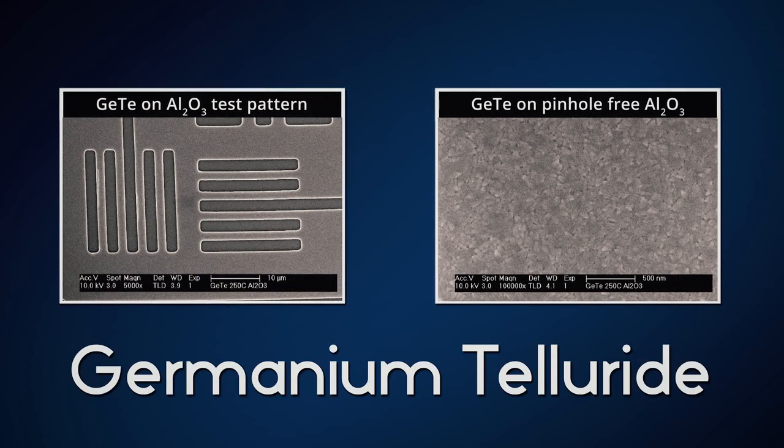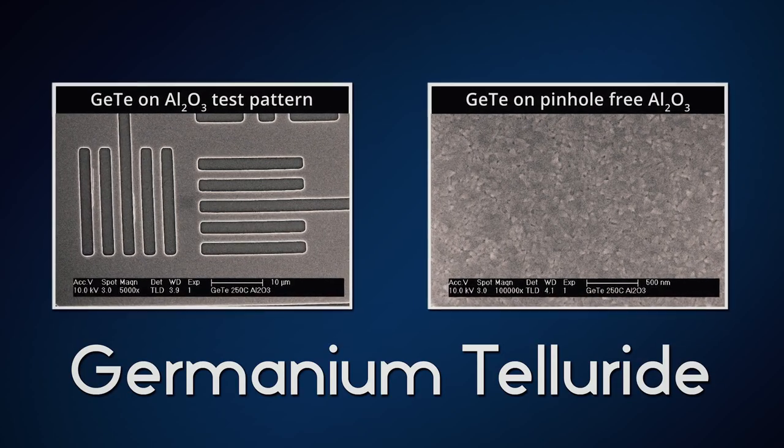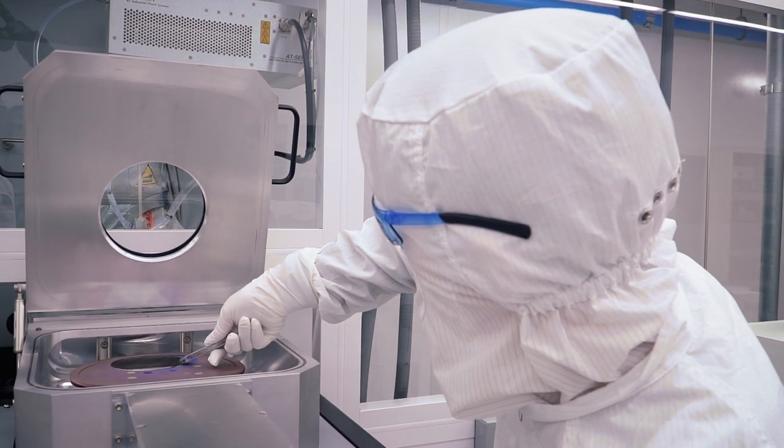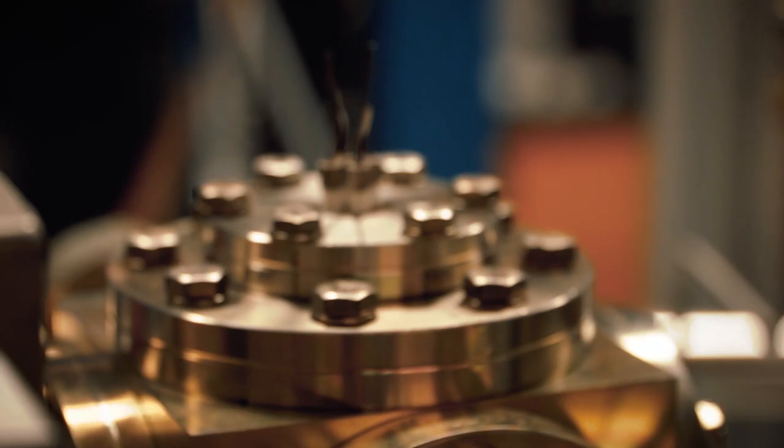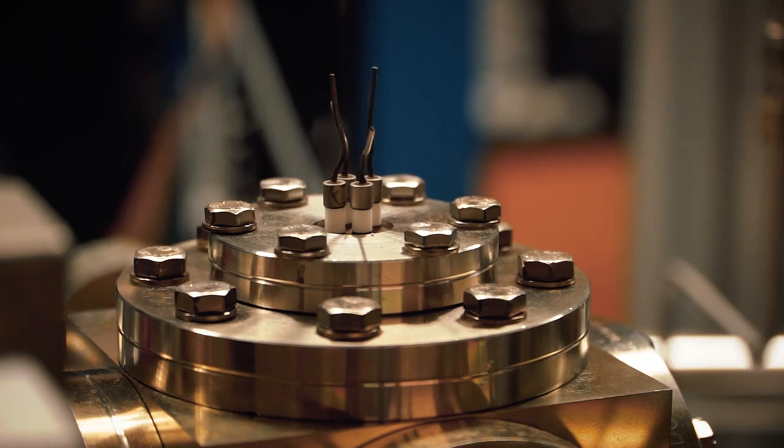One solid-state material that exhibits this is germanium telluride. Interestingly, germanium telluride was initially used as an electronic switching material, but it had a problem because when it was undergoing the phase transition, it was actually expanding and causing failure in memory. We take advantage of its change in resistance — but we decided to look at it differently, and instead of looking at the resistance change, we look at this mechanical property and exploit the mechanical expansion.